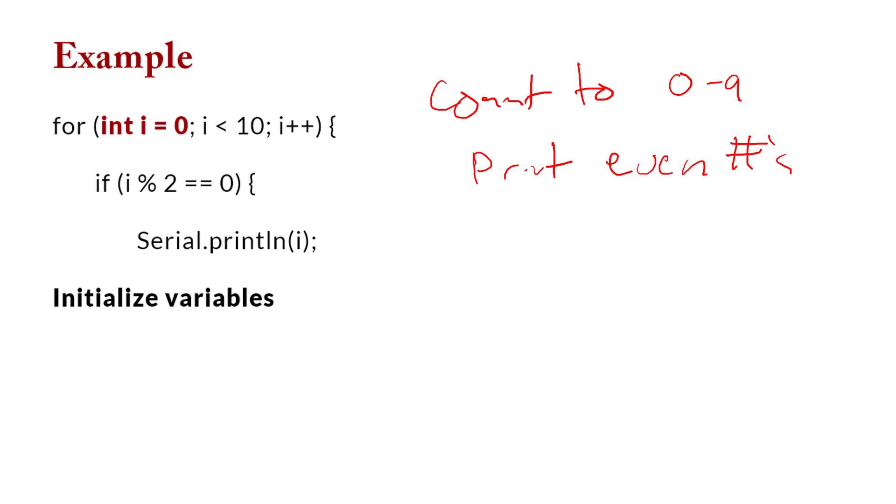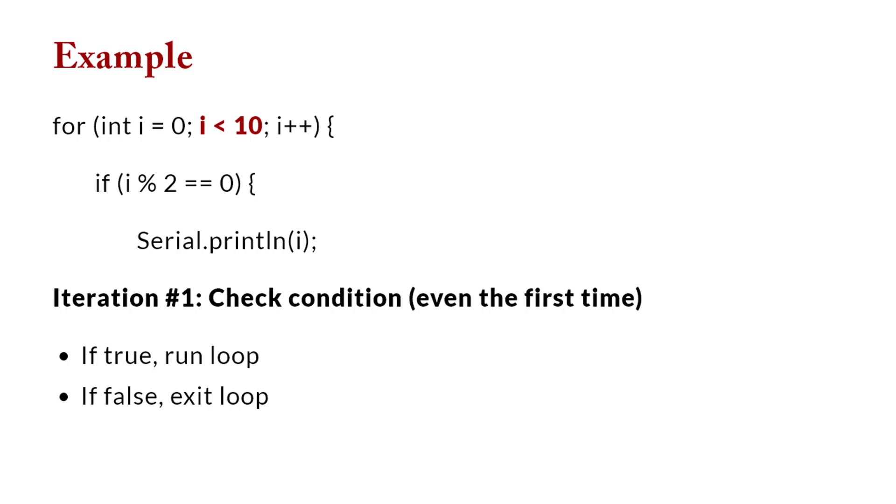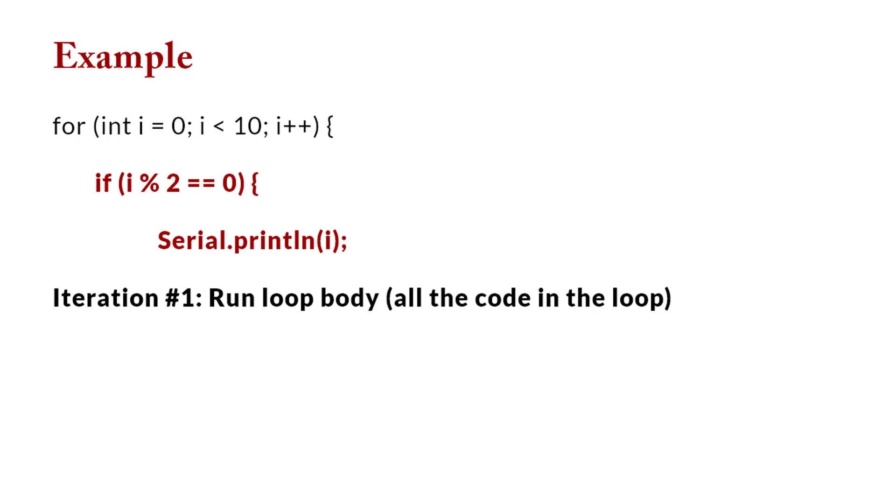So the first thing we do is we say for parentheses, and then we initialize the counter. This is going to be a temporary variable that you're only going to use in this loop. So i is great to use for integer, so let's just say i equals zero. Then we say how long do I want to count for? I would like to count until i is less than ten. And so what happens in the sequence of execution is the very first thing we do in our first loop is we check this condition. Is this condition true? If it's false, we won't run the loop at all. We'll just stop. If it's true, then we execute the body of the loop.